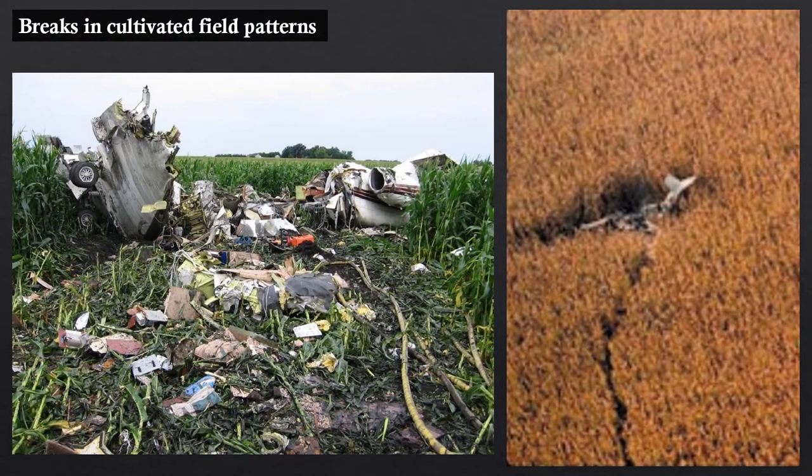Crop farmlands always display a pattern of some type, especially during the growing season. While it's possible that tall growing cornfields could mask the presence of small aircraft wreckage, the damaged or flattened portions of that cornfield will still stand out as breaks in uniformity.